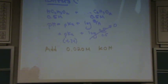Now, when you do a more complex buffer problem, what we're going to add is—I'll add to this buffer 0.020 molar KOH. I'm adding a strong base.